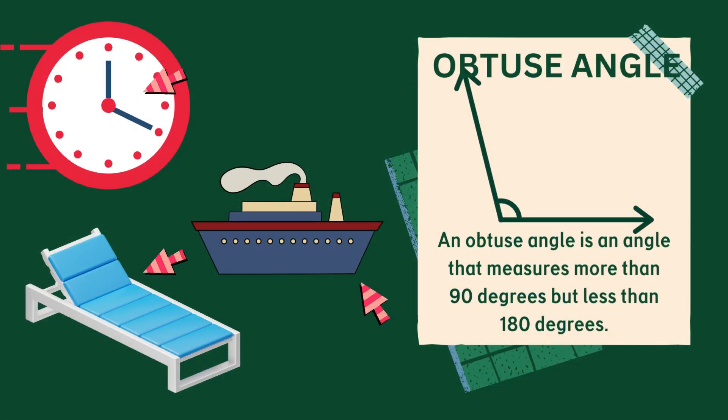An angle that measures more than 90 degrees and less than 180 degrees is called an obtuse angle. As shown on the screen, the angle formed by the hour and minute hands of a clock at 4 o'clock and the inclination at which pool chairs are bent look like an obtuse angle.